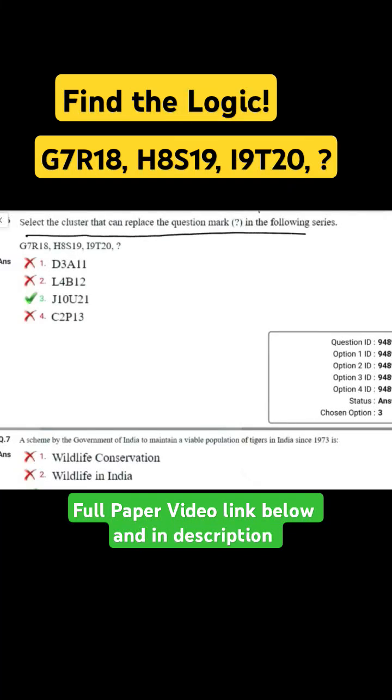Select the cluster that can replace the question mark in the following series: G7R18, H8S19, I9T20. Here G to H is plus 1 by positional values, and 7 to 8 is plus 1.